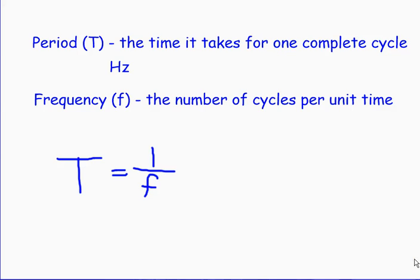Period and frequency are two things that are very important to define for circular motion. The period of any object is the time it takes for one complete cycle — in terms of circular motion, the time it takes for the object to move around the circle once. Frequency is measured in Hertz, which is equivalent to one over seconds, so frequency is the number of cycles per unit time.